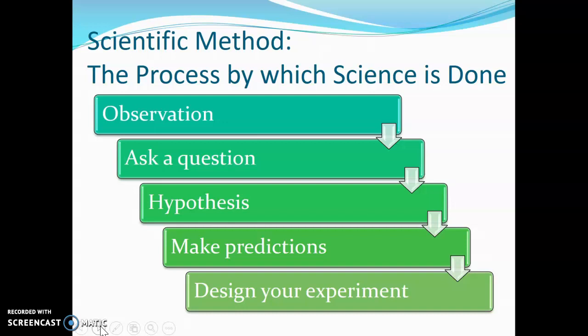The scientific method is a process by which science is done. You start out with an observation. For example, you might be at the lake one day and you see a bird jumping in and out of the water. So that prompts you to ask a question: why is that bird jumping in and out of the water?